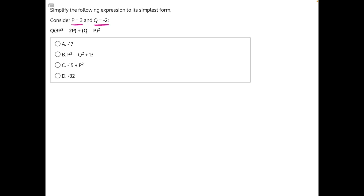Let's start by making those substitutions. We have q, which is equal to negative 2, times 3p, which we know is equal to 3, and that is squared, minus 2 times p, which again is 3, plus q, which is negative 2, minus p, which is 3, and all of that is squared.